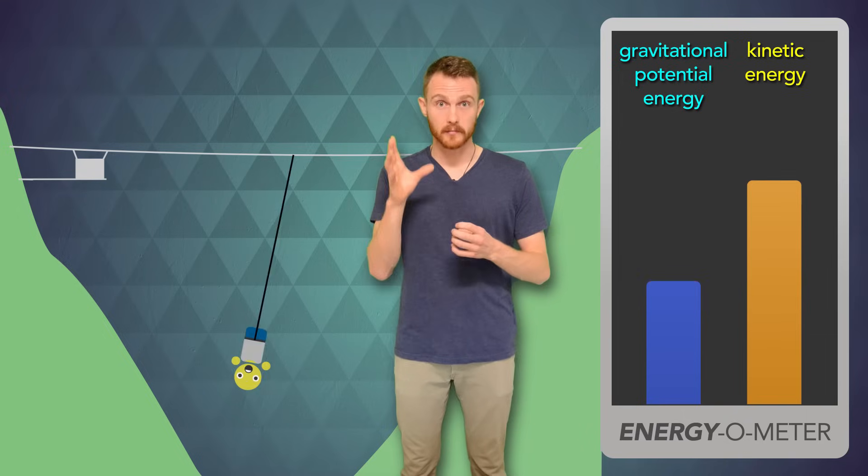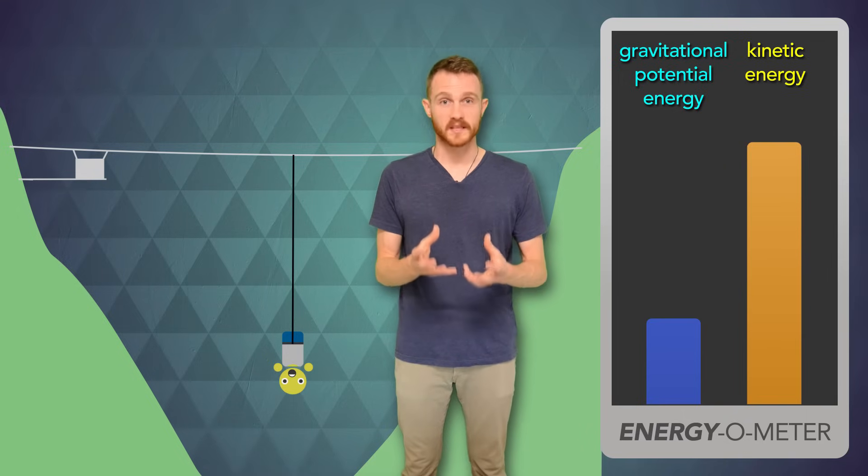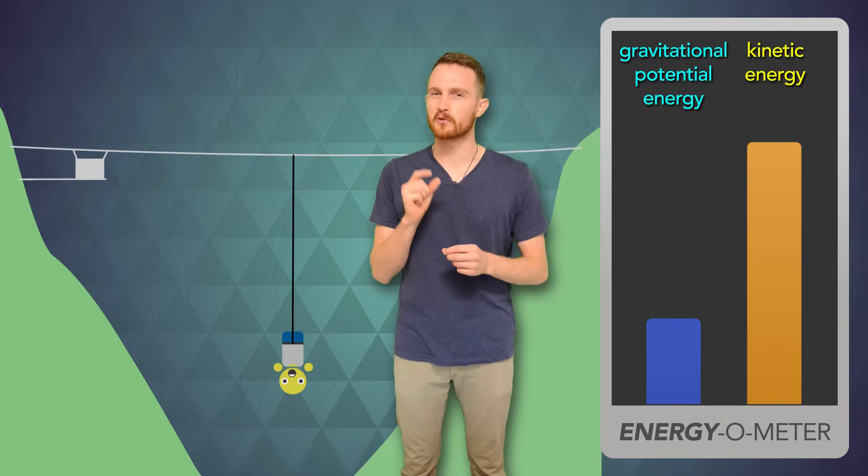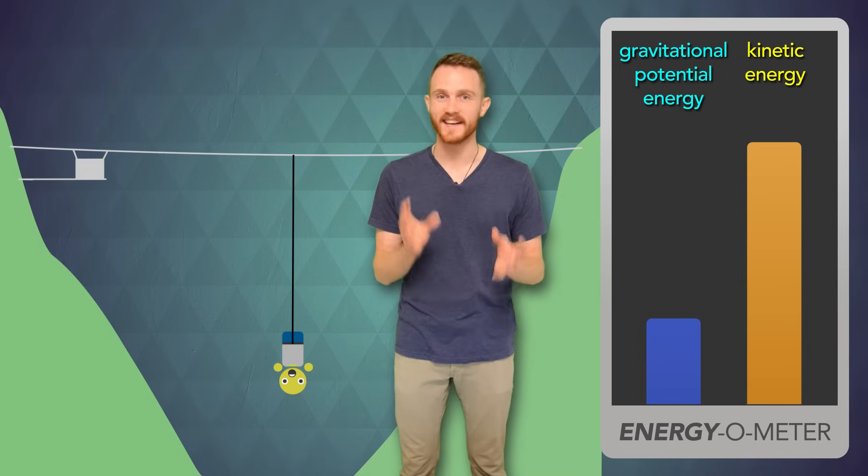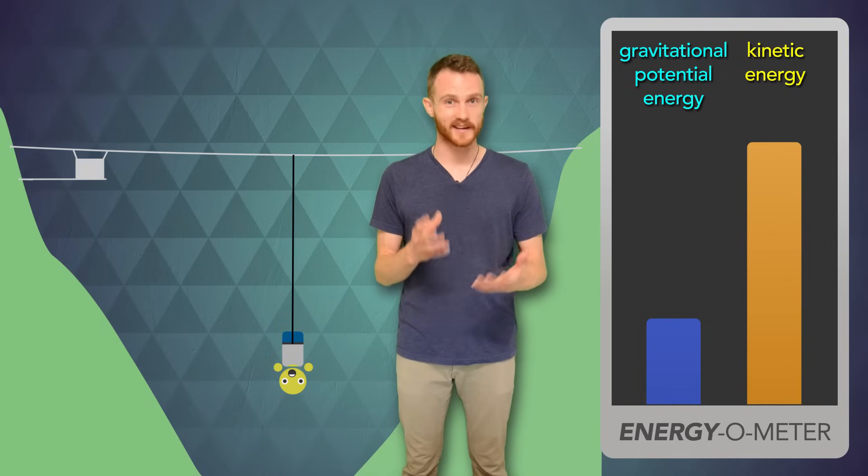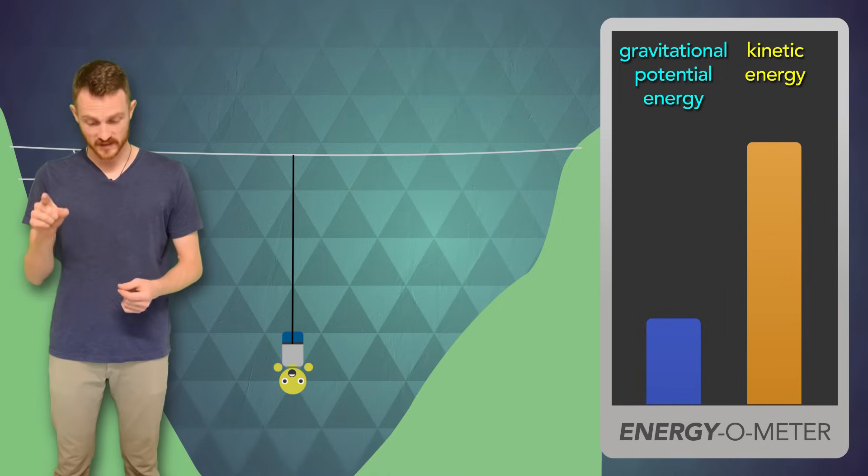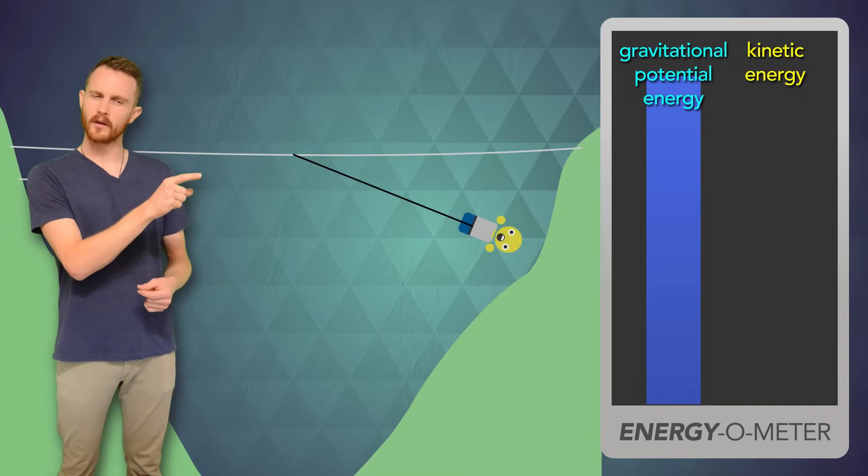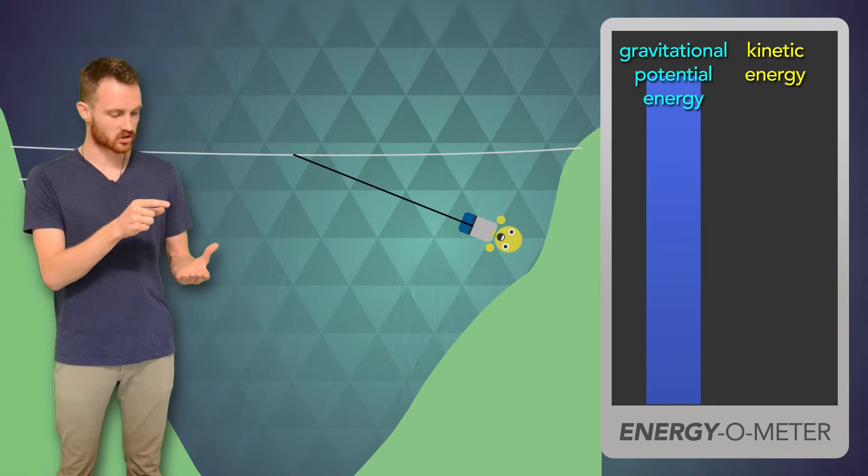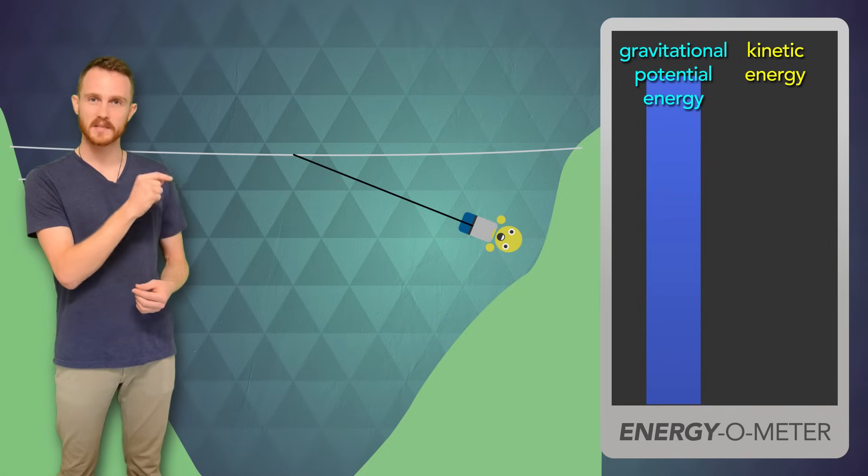Now as I'm let go, I start moving and that gravitational potential energy changes into what's called kinetic energy. Anything that's moving has kinetic energy. The faster I go, the more kinetic energy I have. Now as I swing past the bottom and I start going back up, I slow down and that kinetic energy is changed back into gravitational potential energy.